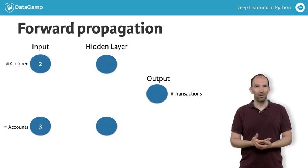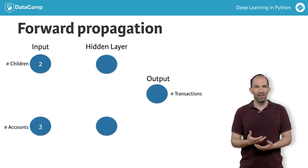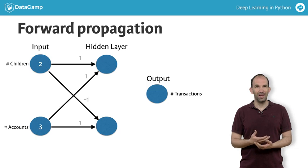This graph shows a customer with two children and three accounts. The forward propagation algorithm will pass this information through the network to make a prediction in the output layer. Lines connect the inputs to the hidden layer. Each line has a weight indicating how strongly that input affects the hidden node that the line ends at.